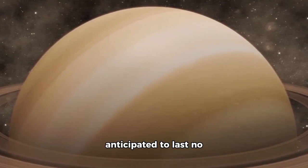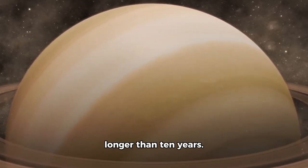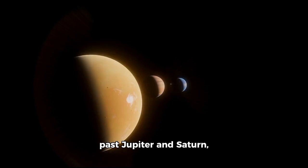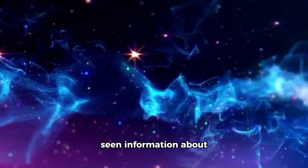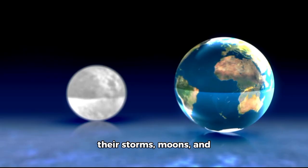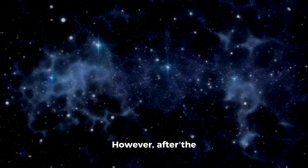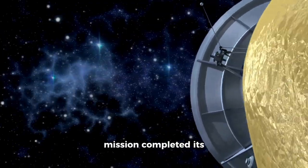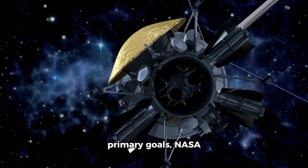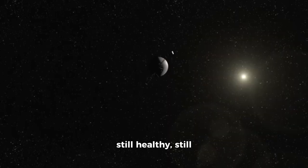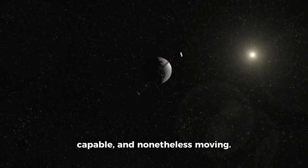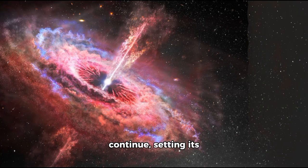Voyager 1 began as an ambitious mission to photograph the gas giants, a journey anticipated to last no longer than 10 years. Its original route took it past Jupiter and Saturn, capturing never-before-seen information about their storms, moons, and electric fields. However, after the mission completed its primary goals, NASA realized something remarkable. Voyager 1 was still healthy, still capable, and nonetheless moving. So, they allowed it to continue, setting its course toward the unknown.